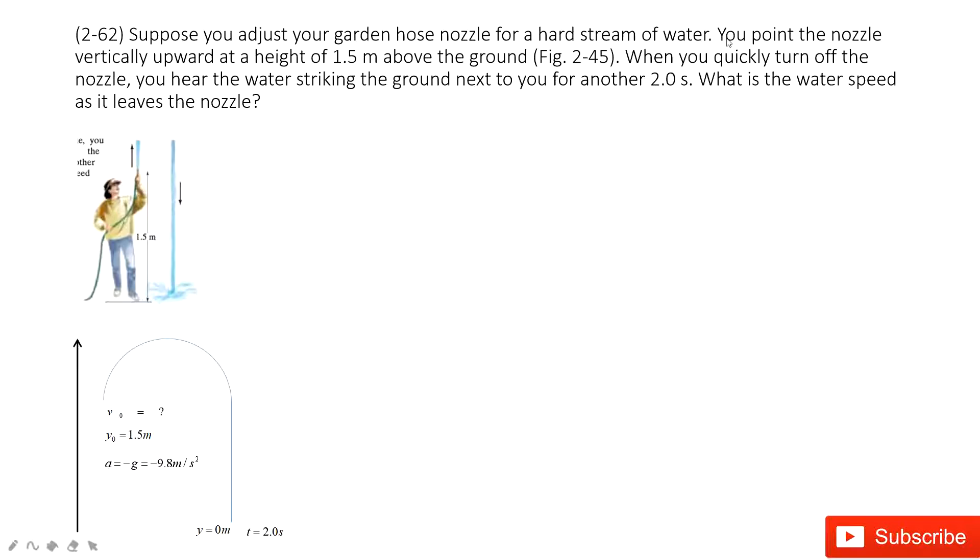So it tells you, you point the water vertically up at a height of 1.5 meters above the ground. These two sentences tell us the initial velocity is pointing upward, and the initial position is 1.5 meters.